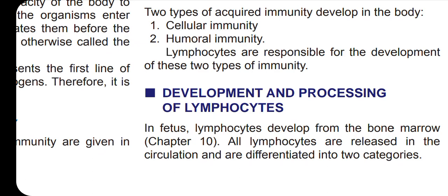The innate immunity is already standing — it defends our body when it is going to be attacked. Next is acquired immunity. Acquired immunity is a barrier against foreign pathogens and is very powerful. In acquired immunity, there are two types: one is cell-mediated or cellular immunity, and the second is humoral immunity.